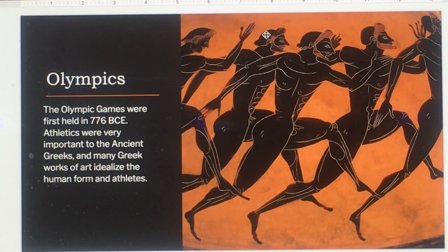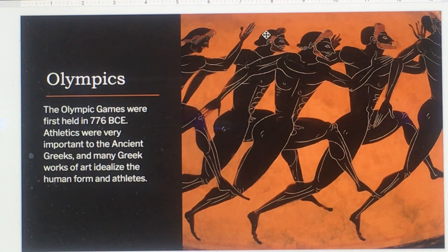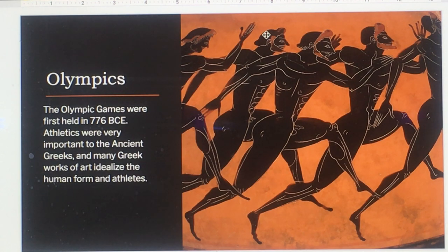The Olympic Games were first held in 776 BCE. Athletes were very important to the ancient Greeks, and many Greek works of art idealized the human form and athletes. Notice that the athletes competed nude.